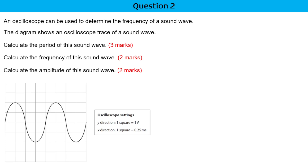They want you to find the period, the frequency, and the amplitude. To find the period — a period is simply the time taken to complete one wavelength. Counting the grids: 1, 2, 3, 4. So the period T equals 4 grids, and each square is 0.25, so it's 0.25.